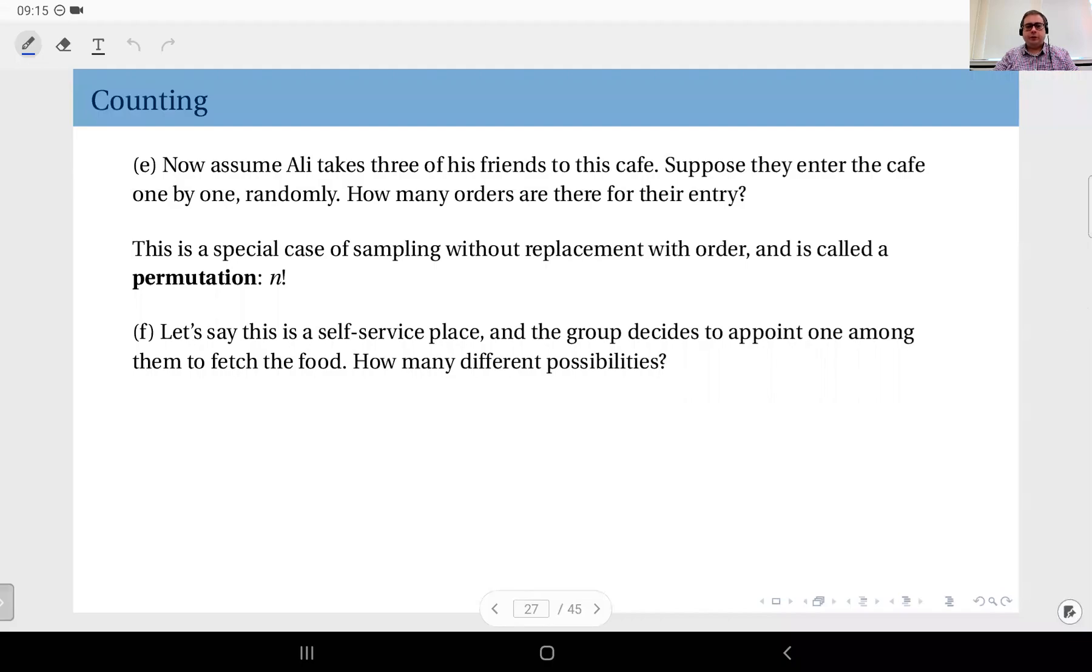Okay, let's look at this next question. Let's say this is a self-service place and the group decides to appoint one of them to fetch the food. How many different possibilities? So the group is four people and we would like to select one of them. Therefore we can do this clearly in four different ways.